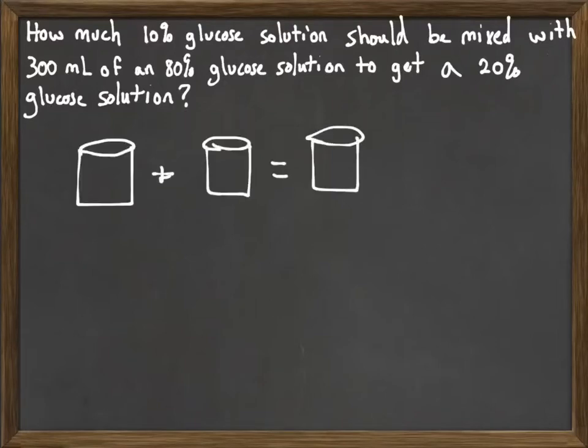So in any mixture problem, I like to draw the standard picture, combining two things together to get a third thing. And then we always label. So here we have a 10% solution, an 80% solution, and a 20% solution.